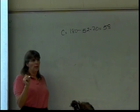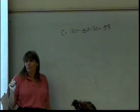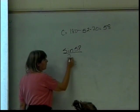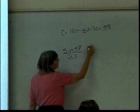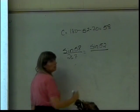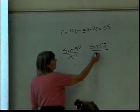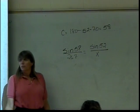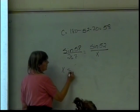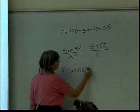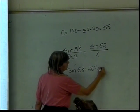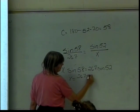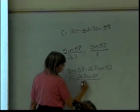So then when I set up my ratio, what will I have? Sine of 58 over 26.7 equals sine of 52 over X. Notice, 52 is opposite the side I'm looking for, which is X. All right, so I have to solve this. Cross multiply, so X times the sine of 58 is equal to 26.7 times the sine of 52. So X equals 26.7 times the sine of 52, divided by the sine of 58.